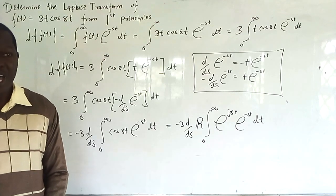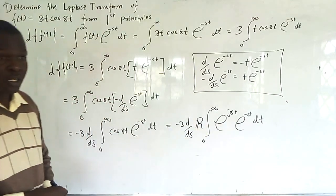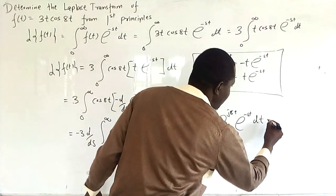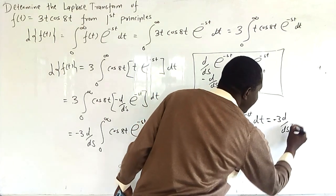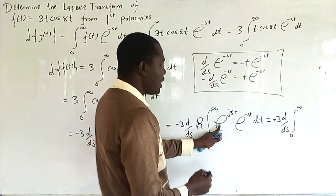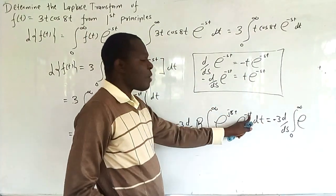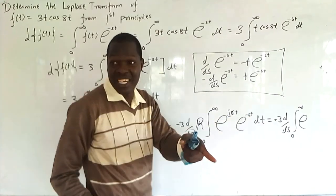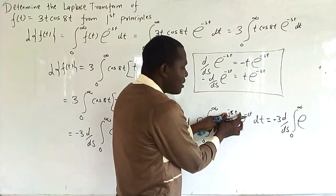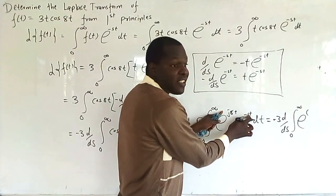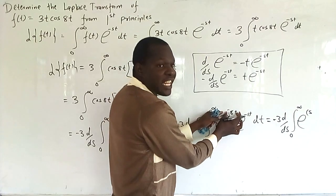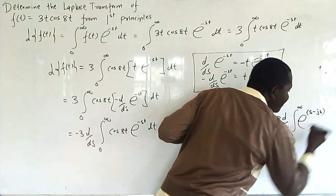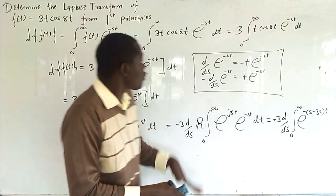We are only going to be concentrated on the real part of this integral. Using the laws of indices to join the exponents — same base, add the powers — we factorize out negative t. If you factorize out negative t, you remain with s from -st and with -j8 from jat, so s can start positive.